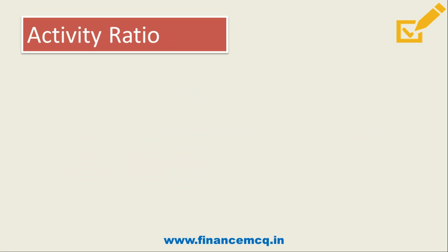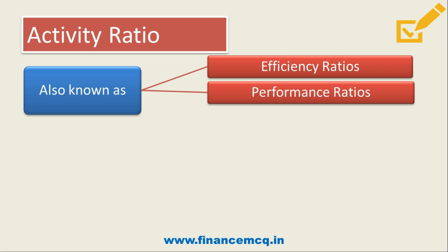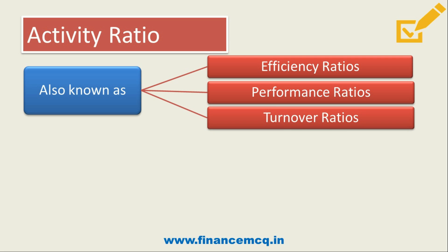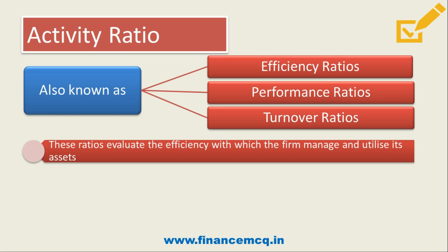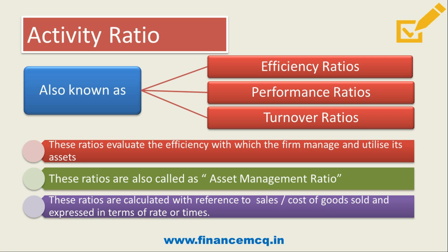Activity ratio is also known as efficiency ratio, performance ratio, or turnover ratio. These ratios evaluate the efficiency with which the firm manages and utilizes its assets, and are also called asset management ratios. These ratios are calculated with reference to sales or cost of goods sold and expressed in terms of rate or in times.